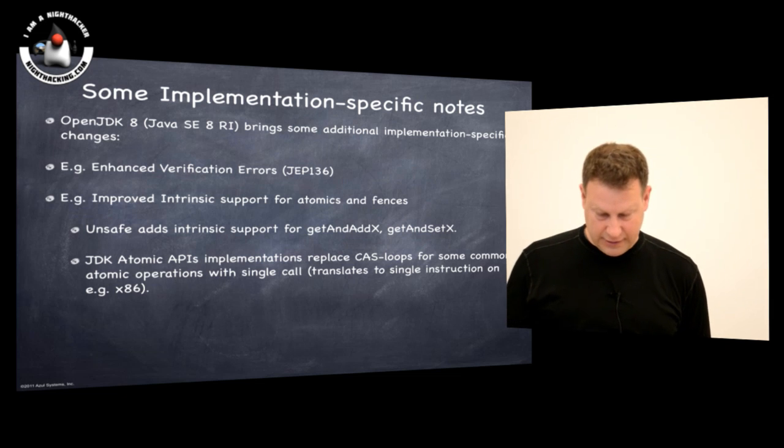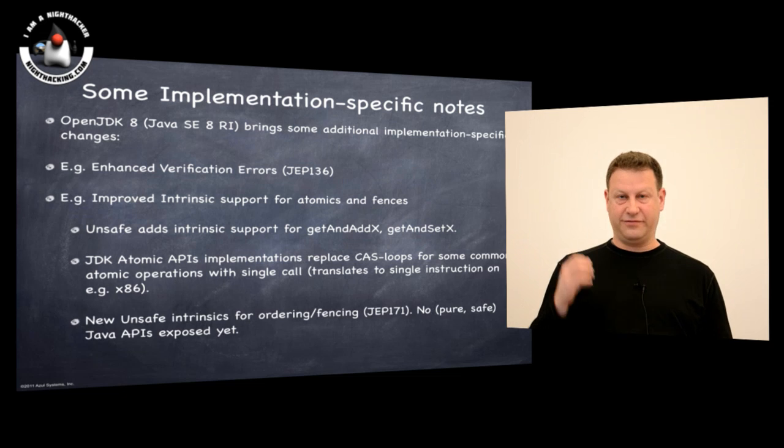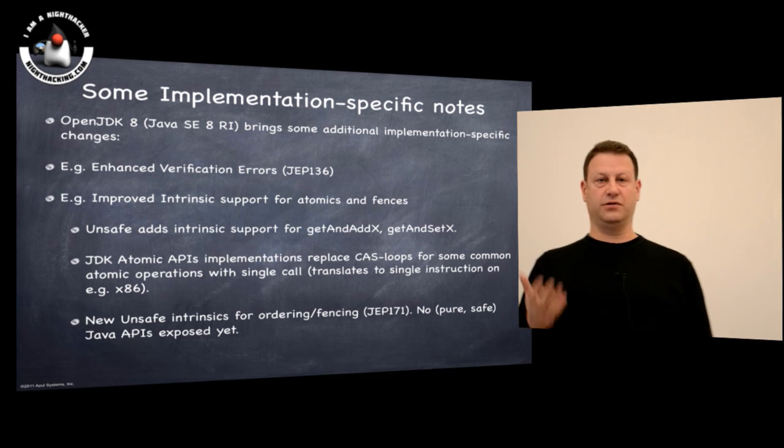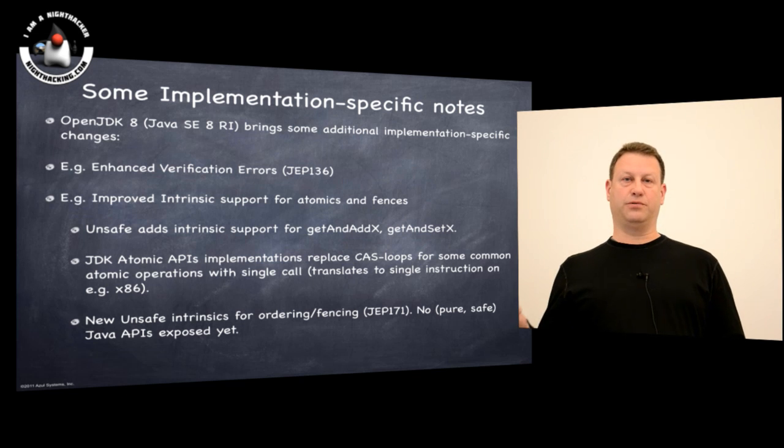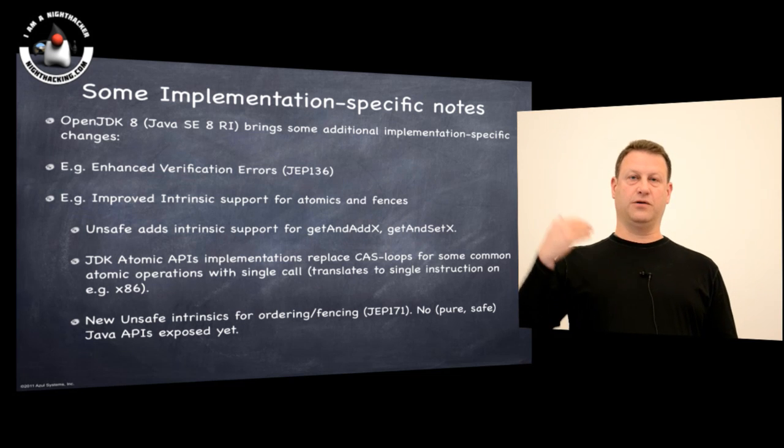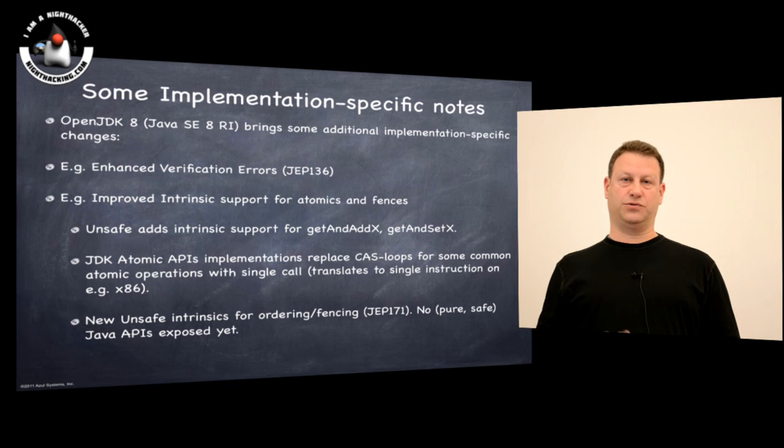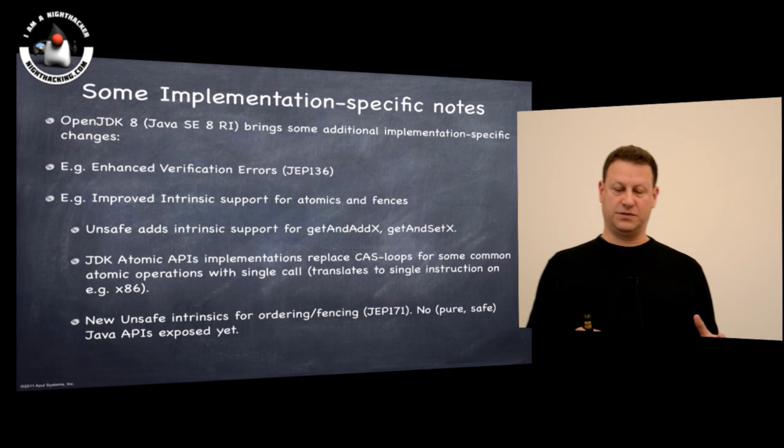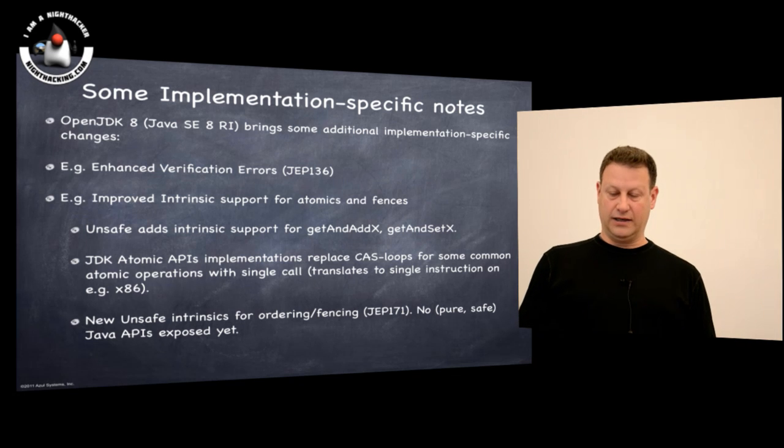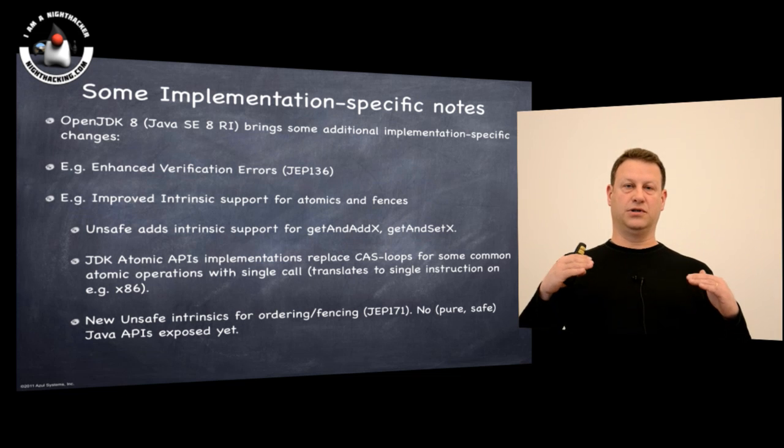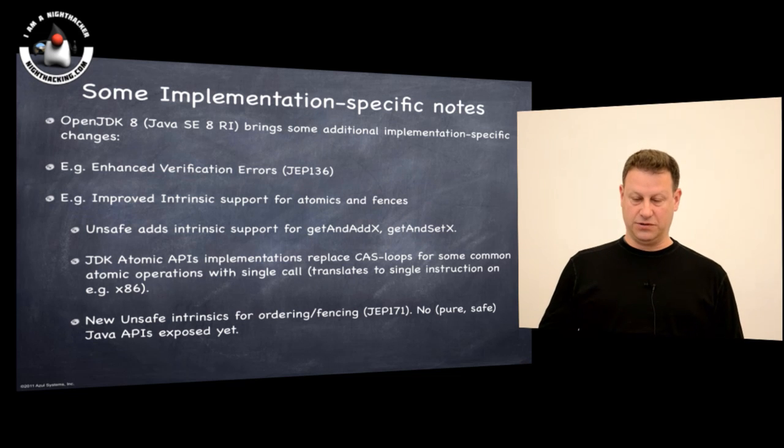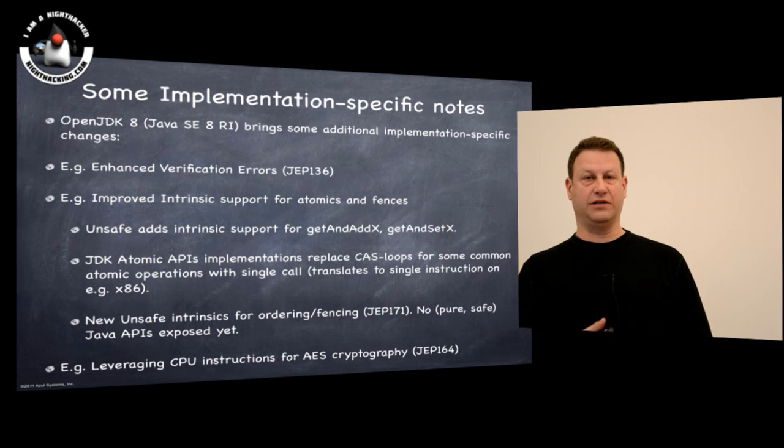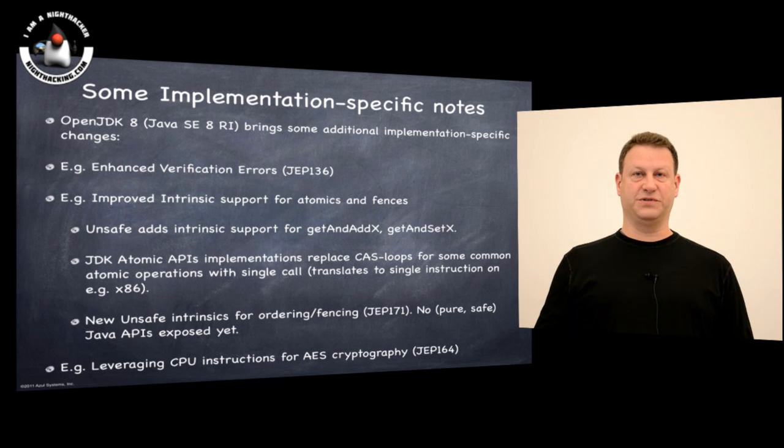We have additional unsafe intrinsics built for fencing, memory ordering, so you can apply ordering in certain code without having to apply actual operations. For example, you can fence and order loads against future loads and stores without actually needing to do a volatile store or a volatile load. The fencing APIs that were added are specifically in the unsafe section. As far as I know, those have not yet been exposed in actual pure Java form with Java fencing APIs, but those will hopefully come in the future. We have things like leveraging CPU instructions directly for encryption purposes, which has obvious performance implications.